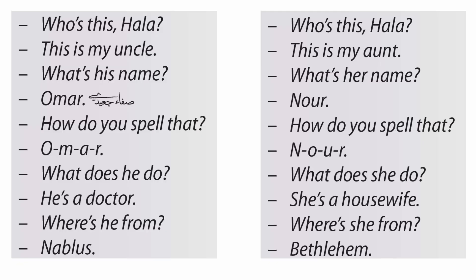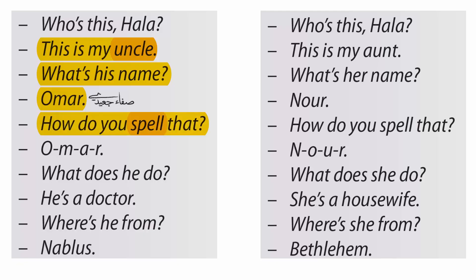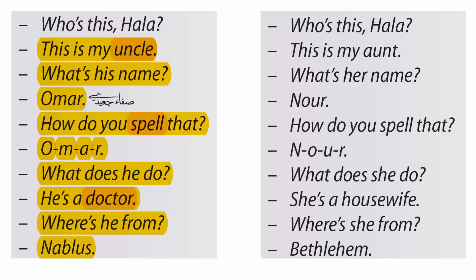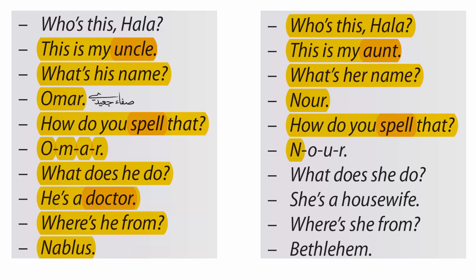Who's this, Hala? This is my uncle. How do you spell that? O-M-A-R. What does he do? He's a doctor. Where's he from? Who's this, Hala? This is my aunt. How do you spell that? N-O-U-R. What does she do? She's a housewife.